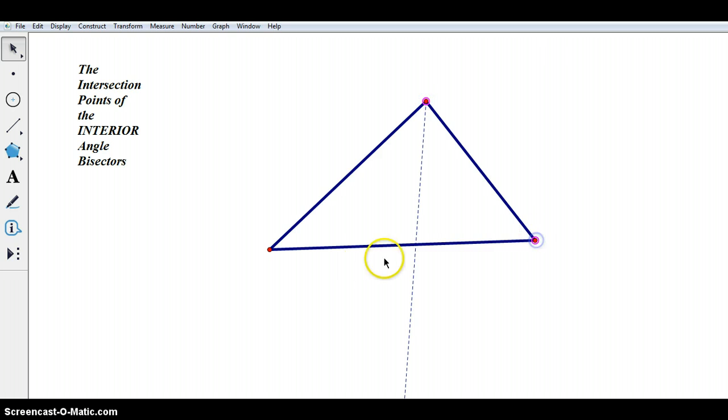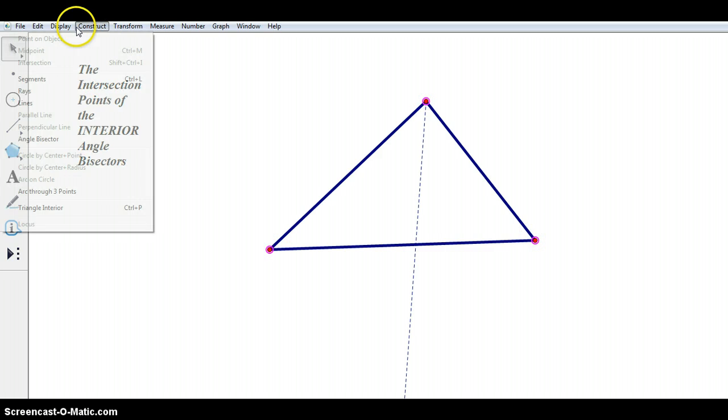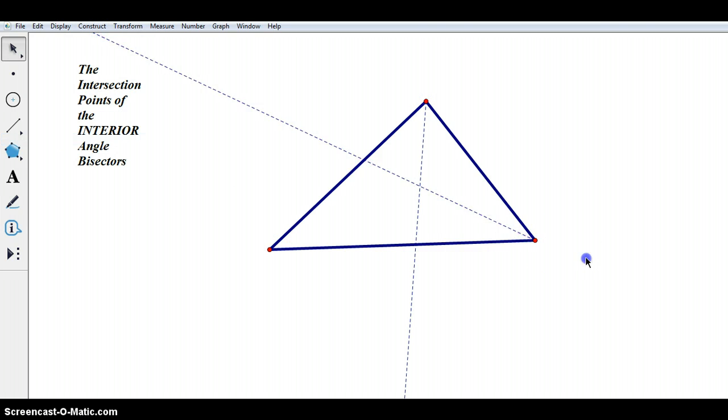Do that again. Then we want the next angle along. So we choose the points in that order. Construct angle bisector. Fantastic. And then the third one.